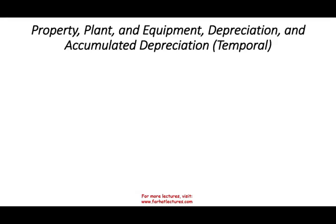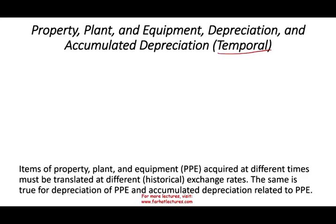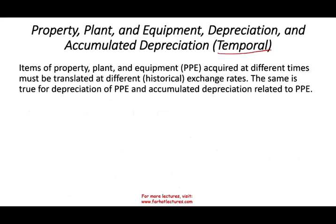Now let's talk about property, plant, and equipment, starting with the temporal method — the most challenging method. Items of property, plant, and equipment acquired at different times must be translated at different historical exchange rates. So whenever we bought them, we have to keep track of that rate. The same is true for depreciation expense and accumulated depreciation — they follow the same historical rate as the asset they relate to.